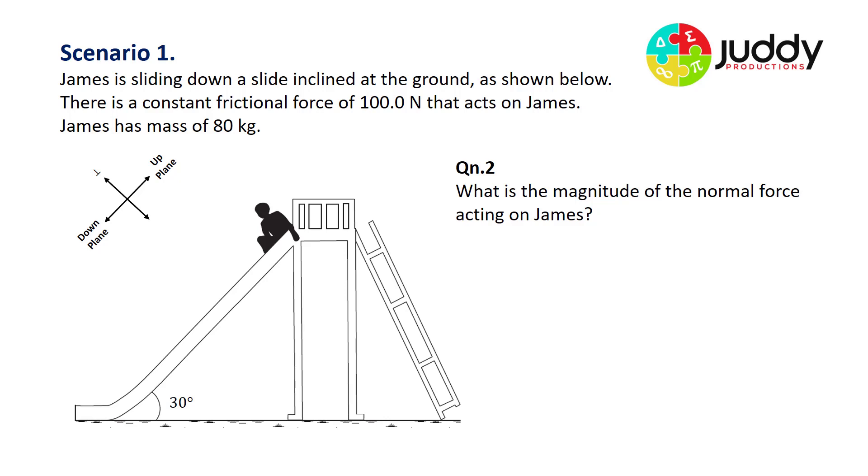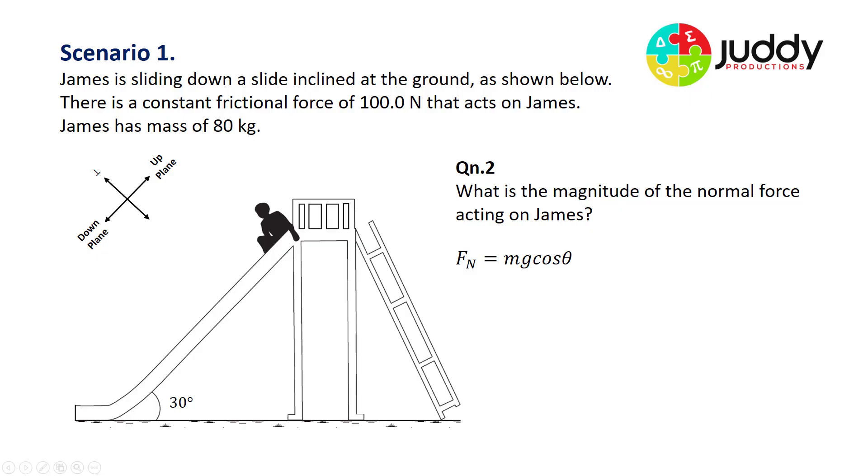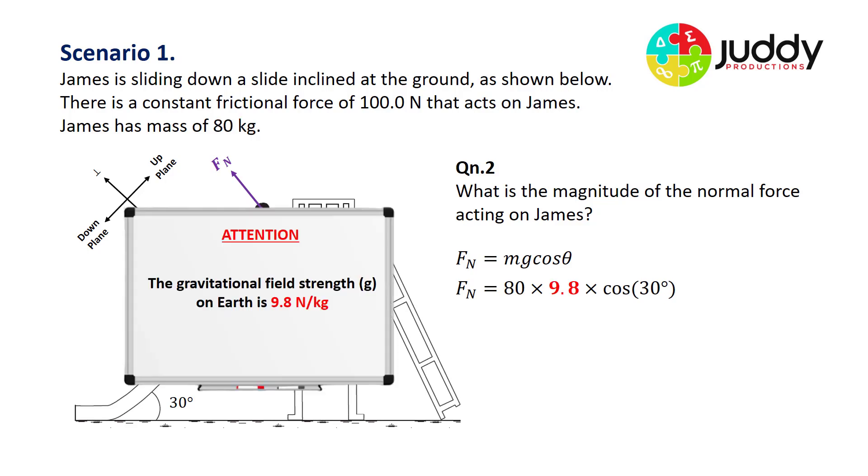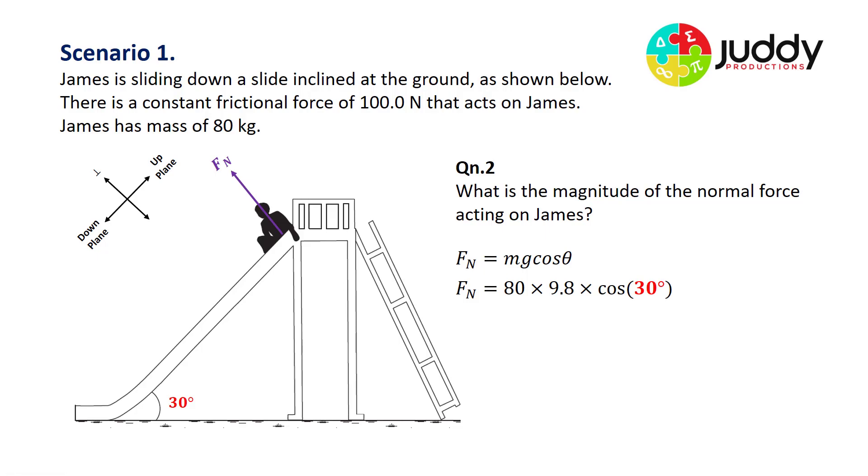Question two: what is the magnitude of the normal force acting on James? The equation for the normal reaction force is Fn equals mg cos theta. It's effectively the component of James's weight acting perpendicular to the slide surface. So Fn equals 80 kilograms multiplied by 9.8, which is gravitational field strength on earth, multiplied by cos of 30 degrees, the angle of inclination. Multiply these together and you end up with a normal reaction force of 678.96 newtons or rounded to 679 newtons.